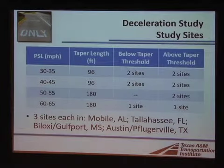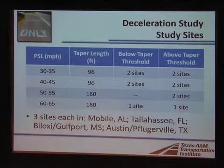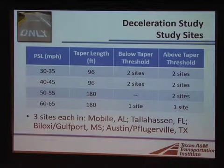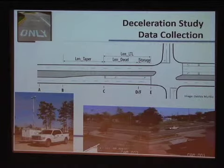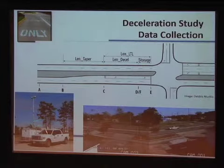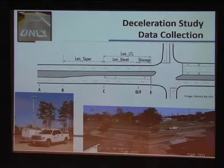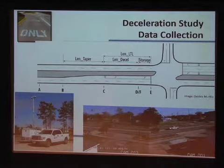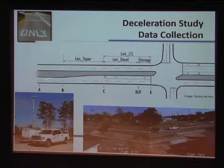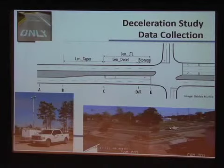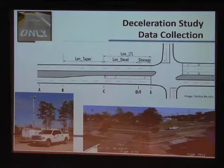We set up a matrix based on posted speed limit and taper length categories, shooting for two sites in each cell. We ended up with a total of 12 sites, three each in cities in Alabama, Florida, Mississippi, and Texas to get geographical diversity in our driver population. Primarily our data came from video — we towed our TTI video trailer and got video of the entire deceleration lane and approach to the intersection, supplemented by counters, LIDAR, and other data. We used the video to record how fast drivers were covering certain distances and translated that into speeds.